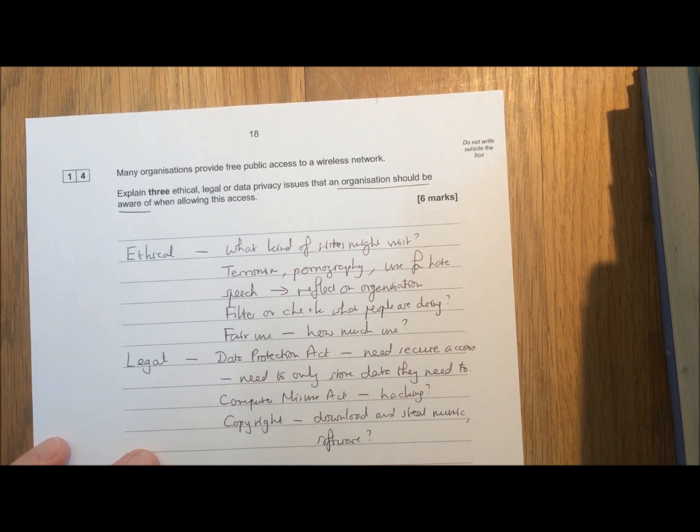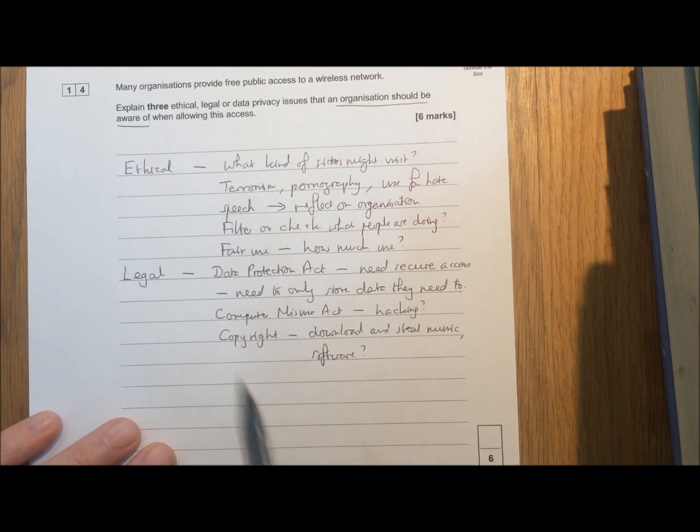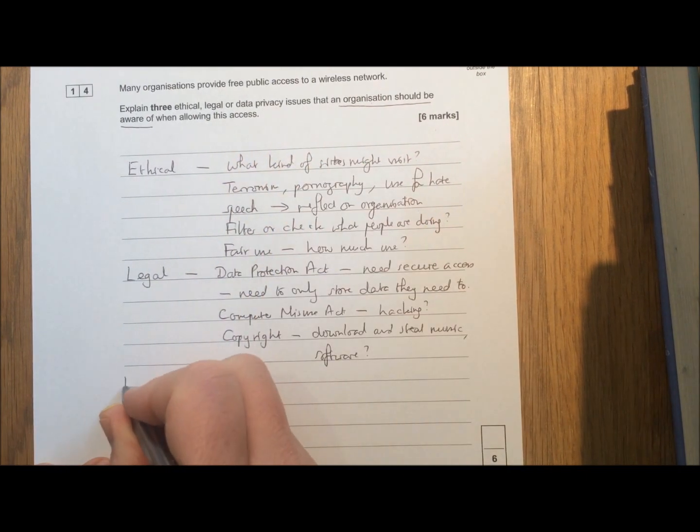There's some legal thoughts that we might have. Choose one of those, write down what the problem is and say why it's a problem for the organisation. Then lastly we want to talk about data privacy.